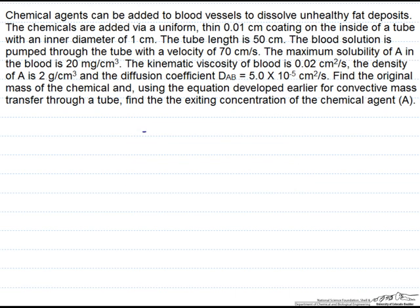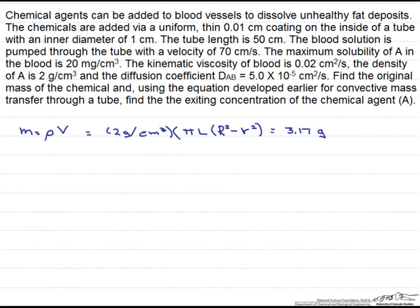Let's first start with the mass. Our mass is equal to the density of the chemical agent times the volume of that coating. Our density is 2 grams per centimeter cubed, as stated in the problem. Our volume is given as pi times the length of the tube, multiplied by big R squared — the outside radius of the tube — minus little r squared, which is the inside radius of the tube. When we calculate this, we find that the mass for that coating is 3.17 grams.